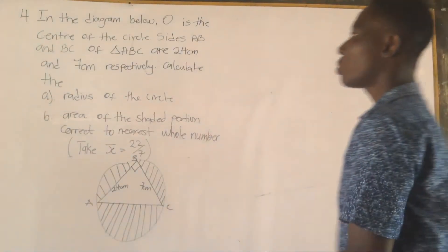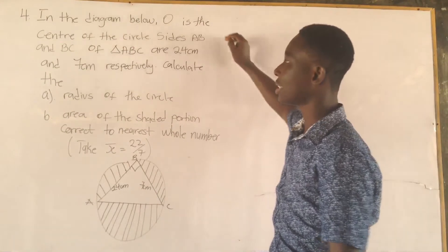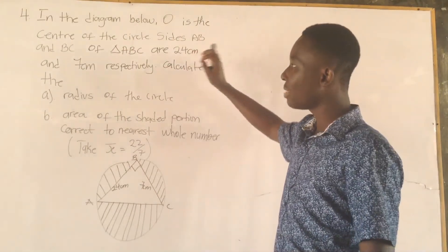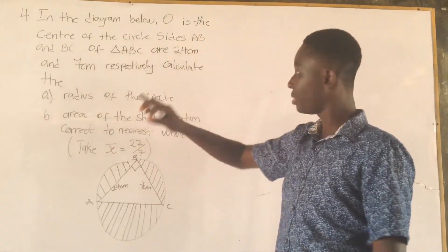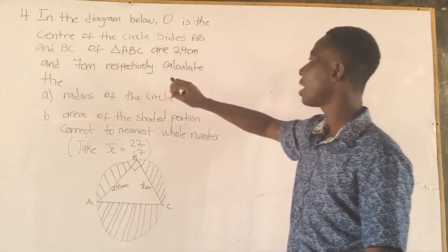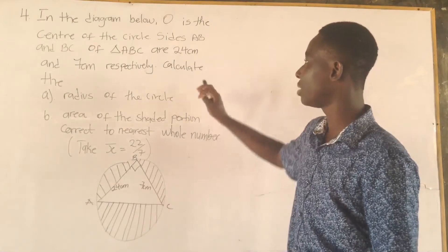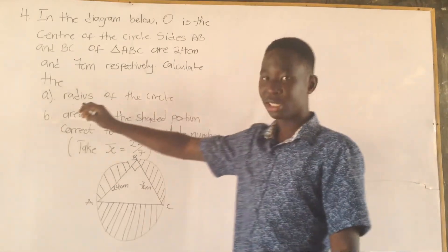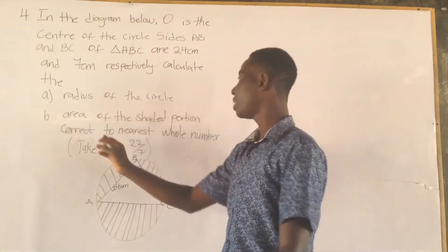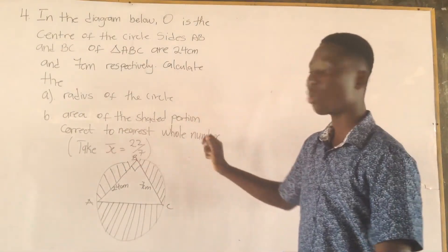Number 4. In the diagram below, O is the center of the circle. The sides AB and BC of angle ABC are 24 cm and 7 cm respectively. Find: A, the radius of the circle; B, the area of the shaded portion correct to the nearest whole number.